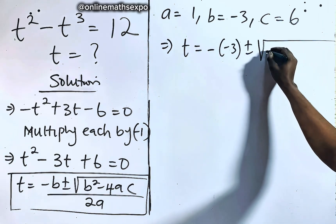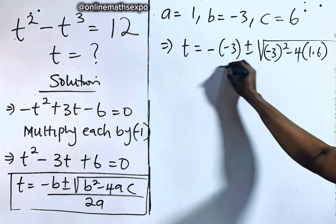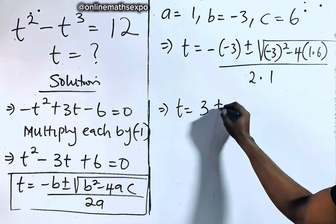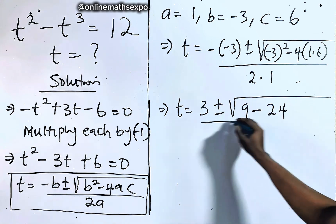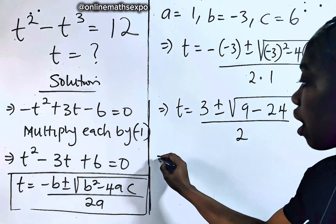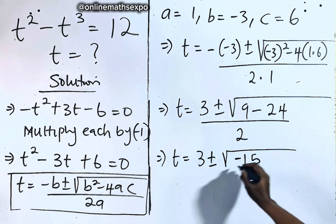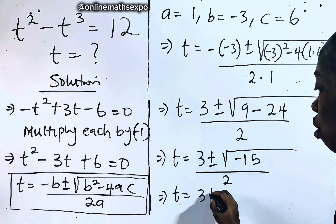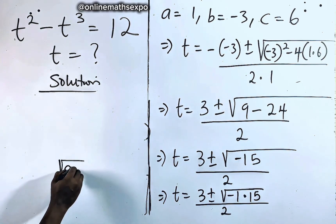Using the quadratic formula: t equals negative b plus or minus square root of b squared minus 4ac, all divided by 2a. Substituting: t equals negative(−3) plus or minus square root of (−3) squared minus 4 times 1 times 6, divided by 2 times 1. This gives t equals 3 plus or minus square root of 9 minus 24, divided by 2, which is square root of negative 15.